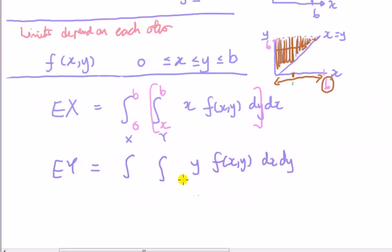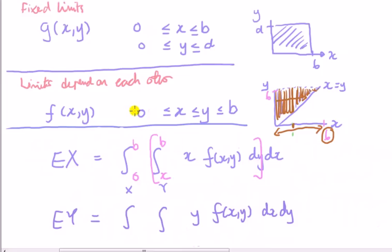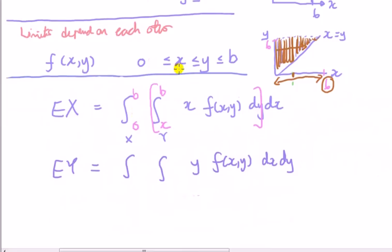So here we want to do it with respect to x first, and just check where does x go. x goes from zero to a given y, x goes from zero to y, and then with respect to y, and for the whole support of y, that's zero to b.